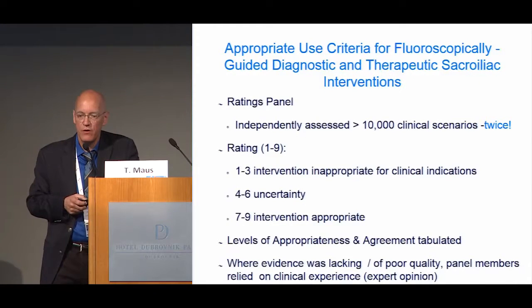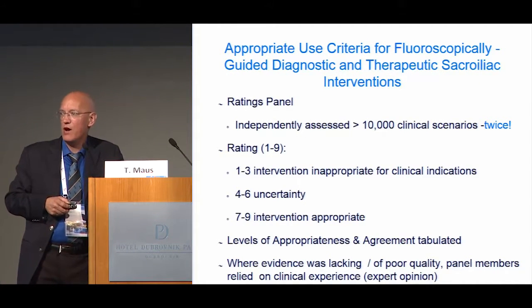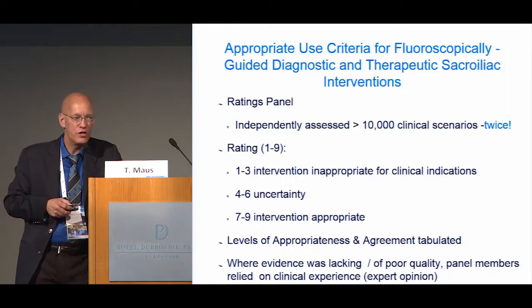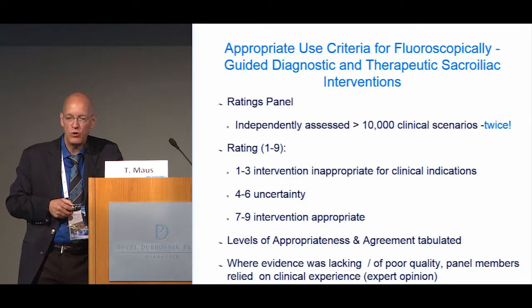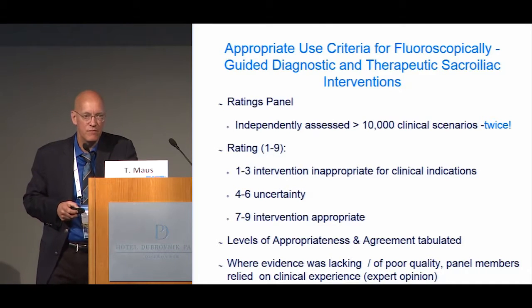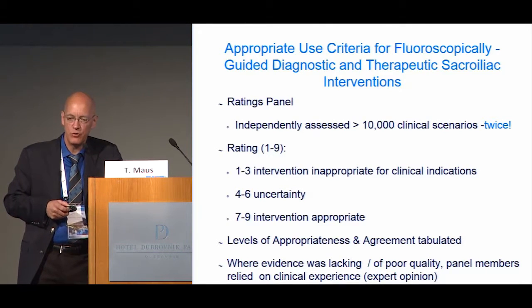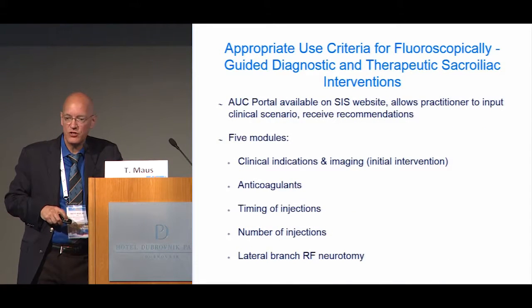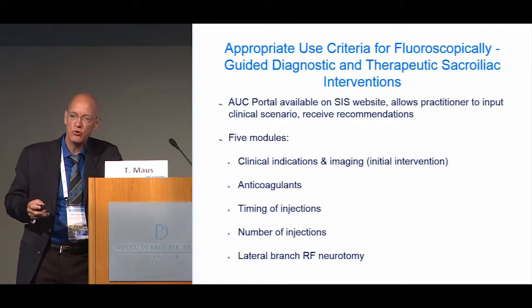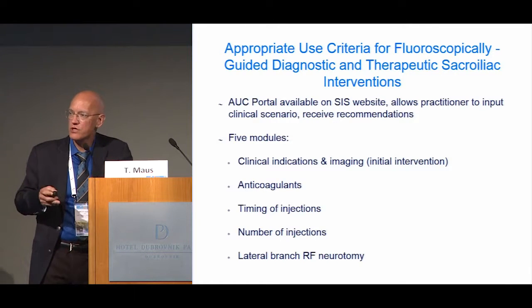The ratings panel took these two systematic reviews and independently assessed more than 10,000 potential clinical scenarios, twice. They rated appropriate utilization from one to nine — one being clearly inappropriate, nine being absolutely appropriate — using a three-tiered category. These are all tabulated and form the database from which the appropriate use criteria was built. When evidence was lacking, we had to fall back on expert opinion. The AUC portal is now available on the Spine Intervention Society website, allowing practitioners to select patient features — physical exam, imaging, history — and get an evidence-based assessment of whether intervention is appropriate.